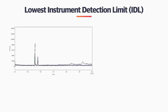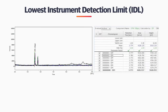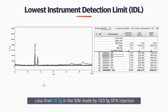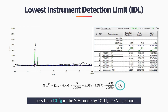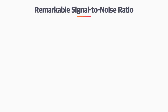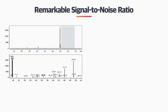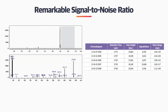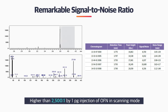Crowzen GC-MS shows the lowest instrument detection limit that is less than 10 femtograms in SIM mode. In scanning mode, the signal-to-noise ratio is remarkable at 2500 to 1.